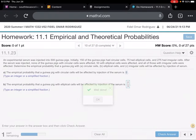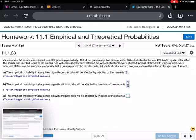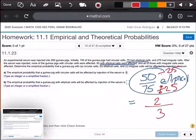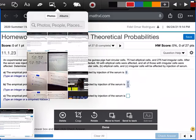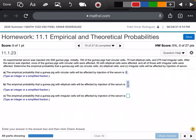And then part C says, let's see. Here we go. Now we can do part C. So the empirical probability that a guinea pig with irregular cells. So let's figure out how many of these guinea pigs had irregular cells. So we had 275 with irregular cells.